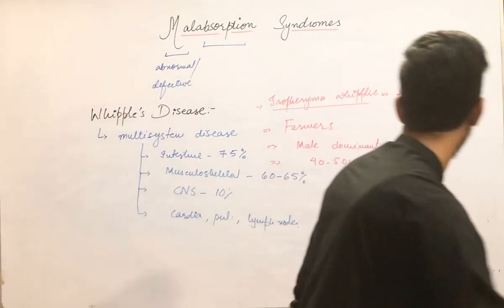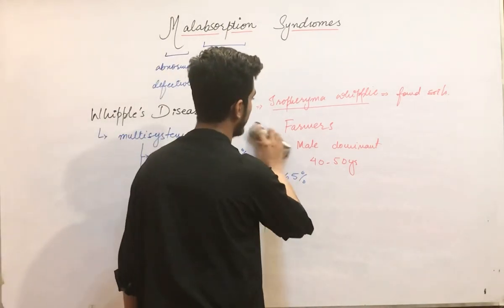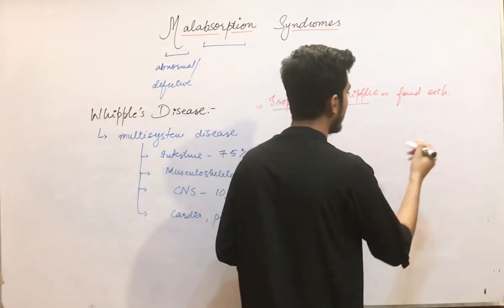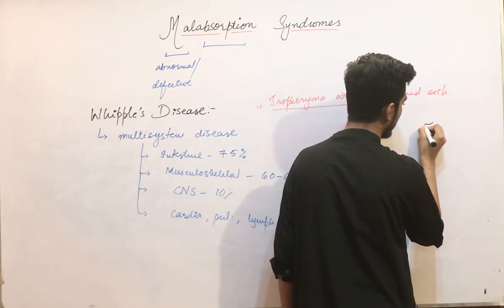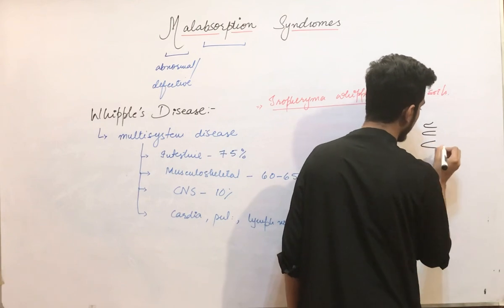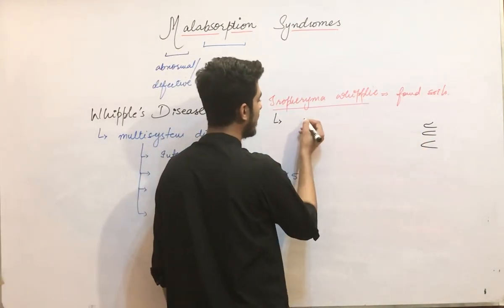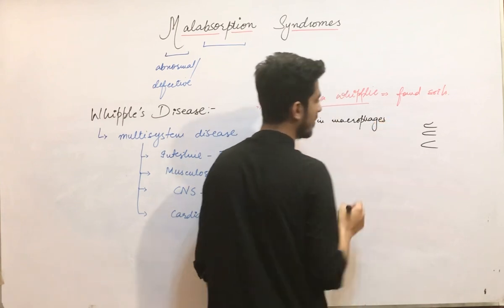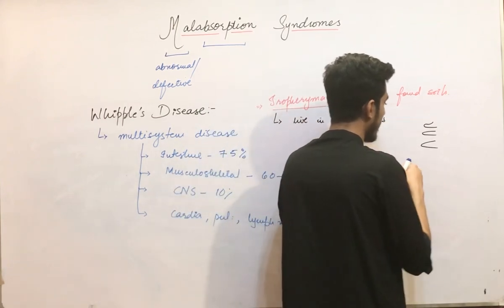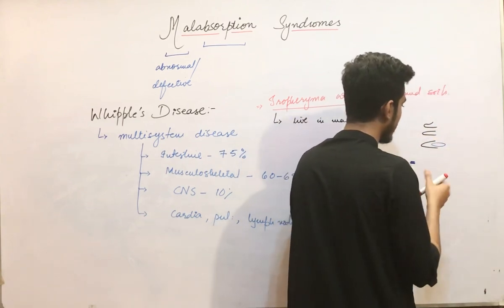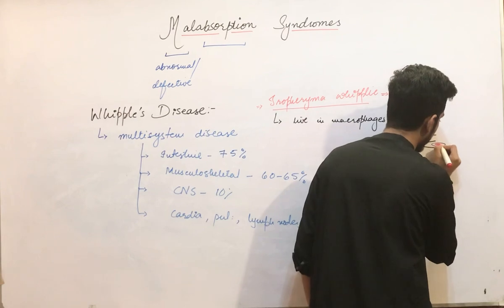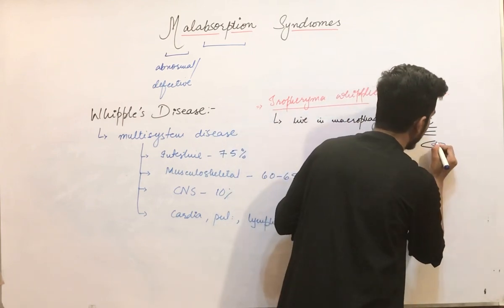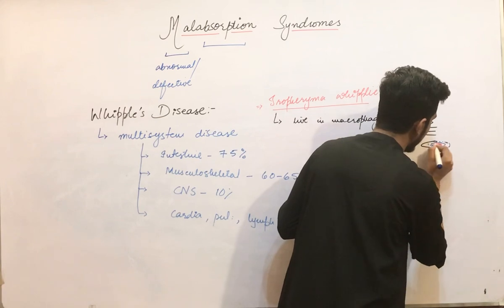Moving on to how this disease involves the different systems of the body: Tropheryma whipplei enters the body, moves into the intestine, and lives in the macrophages of the small intestinal mucosa. When it enters the macrophages, the macrophage structure becomes distorted and enlarged.